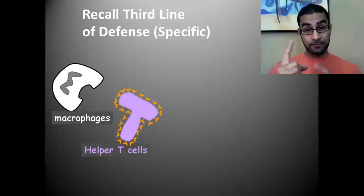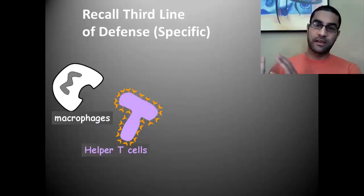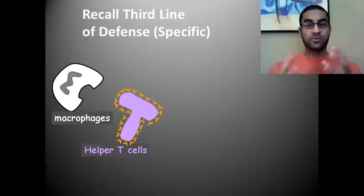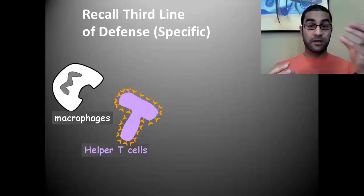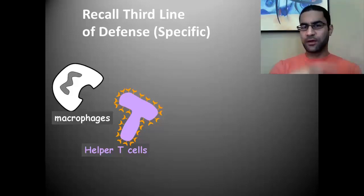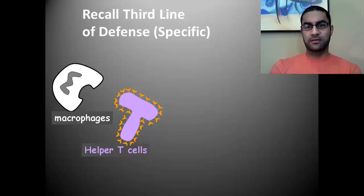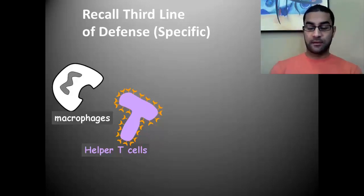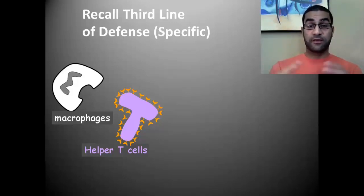A chemical message is sent to bring in the next cell — what we consider the general of the immune response — the helper T cell. The helper T cell has its own unique receptors, and every helper T cell is different, so you have a whole lot of helper T cells that come to the site of the infection. Each one, one by one, tries to match up its receptors to the ones that are on the macrophage that were originally on the pathogen.